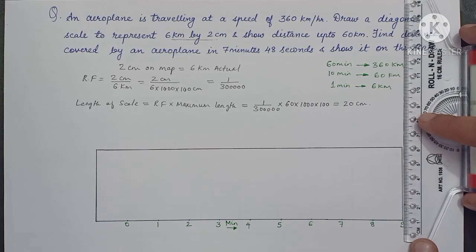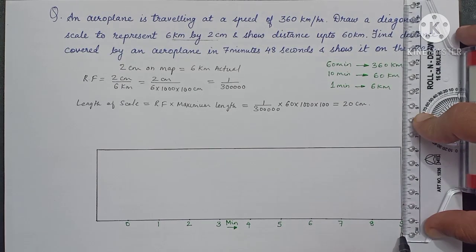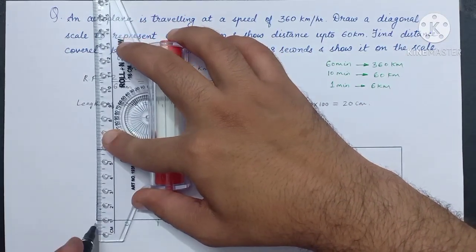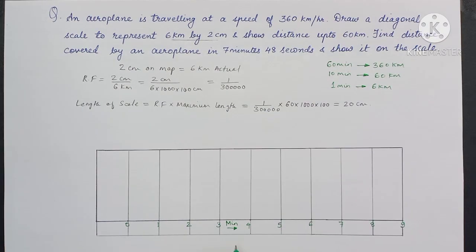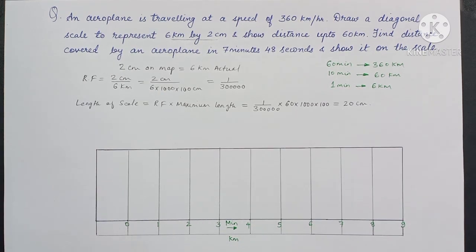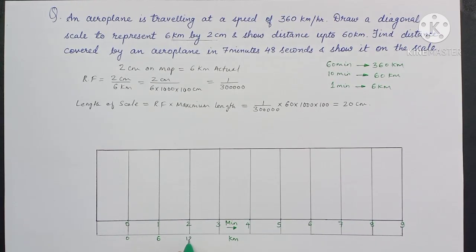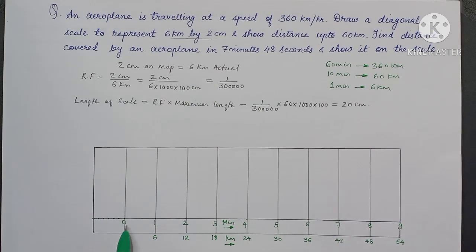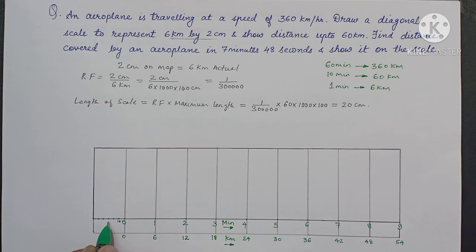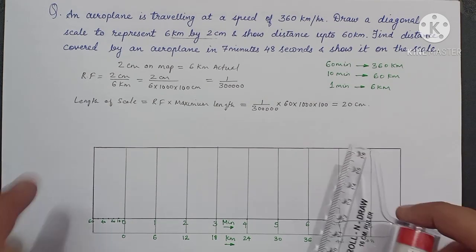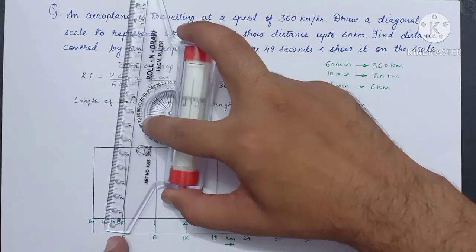We also need to mention kilometer on this scale, so we will add 1 centimeter below to mention the kilometer scale. Draw vertical lines and mention kilometer on the scale; each division will represent 6 kilometer. The first division represents 1 minute, that is 60 seconds. Divide this first division into 6 equal parts, each part representing 10 seconds. Then divide this vertical line into 10 equal parts, each part representing 1 second.